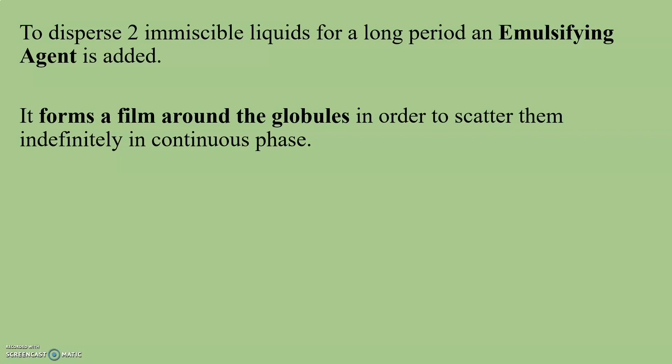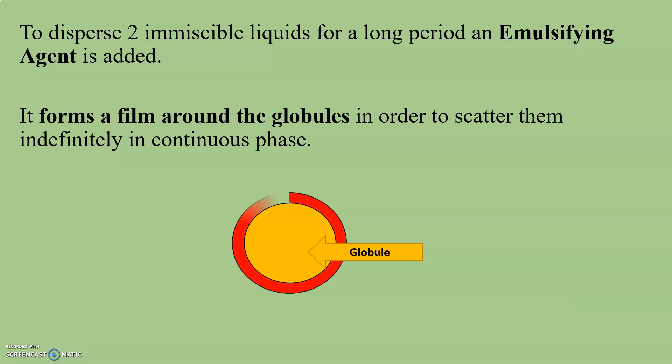In other words, we can say that the emulsifying agent reduces the interfacial tension between the two phases. For example, this is the globule — what the emulsifying agent does is it forms a film around the globules in order to scatter them indefinitely in the continuous phase.